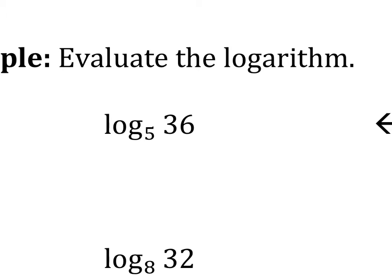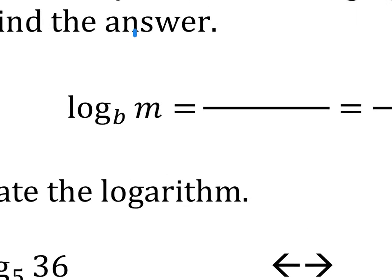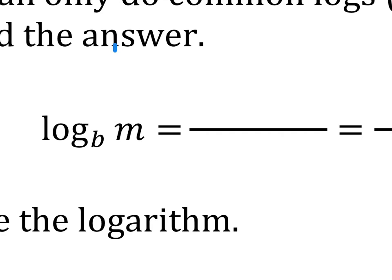If you want to use your calculator to evaluate, you have to use the method called change of base. Change of base allows you to change that problem into any base you want so that you can use the calculator to find the answer. The way to do that is: you write 'log' with whatever base you want — I'll use common log in this first example — and then write the number that's in the middle right next to the log. In the calculator it will be in parentheses, then divided by another log of the same base, and the number that goes in that log is the original base.